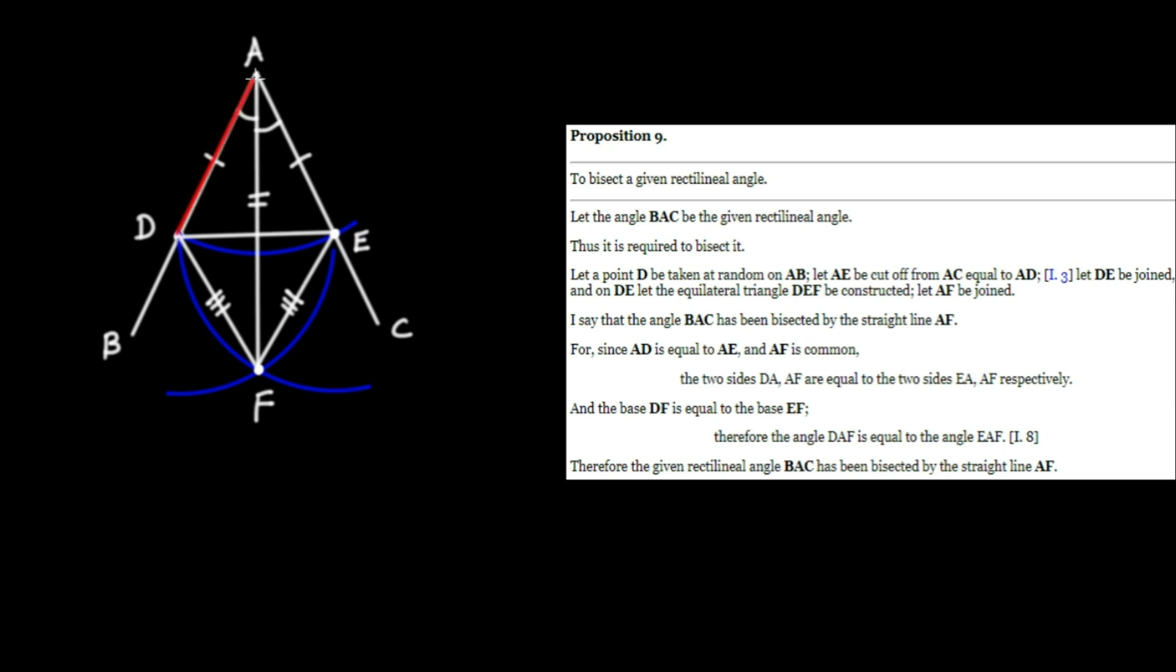We have the triangle DAF. And also, take note of the triangle FEA from here to here to here. And you'll notice that we can use the previous proposition, proposition 8, because these two triangles have their respective sides equal to one another. We can use a side-side-side theorem.